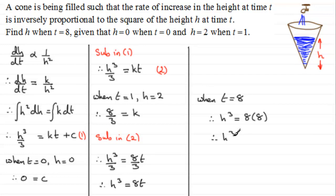We've got that h cubed equals 8 times 8, which is 64. So h cubed equals 64. To get h, we just need to take the cube root of 64, and the cube root of 64 is 4. Therefore h equals 4.